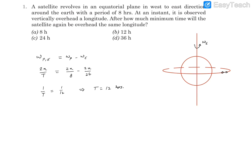There is a satellite which revolves around the Earth in an equatorial plane, moving from west to east. Its time period is 8 hours. At any instant, one observer watches this vertically overhead at a particular longitude. The question asks how much minimum time it would take for the satellite to reappear at the same longitude for the same observer.